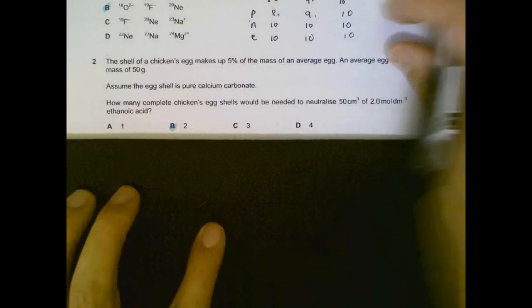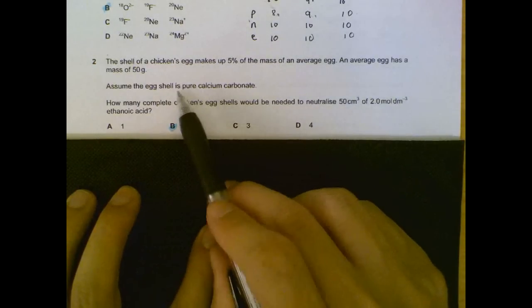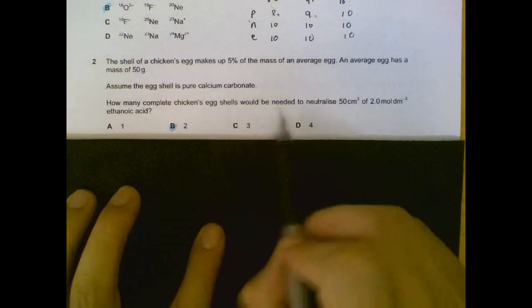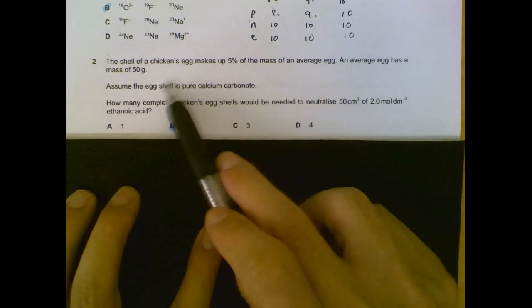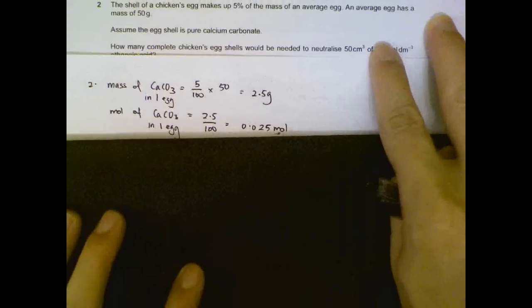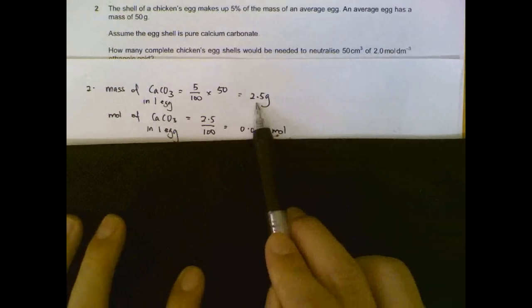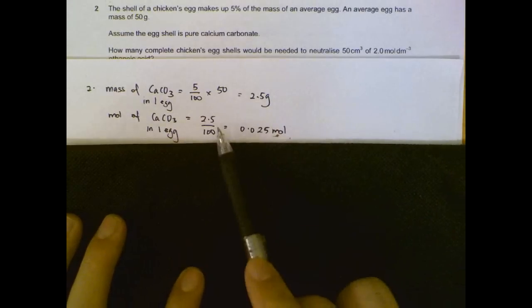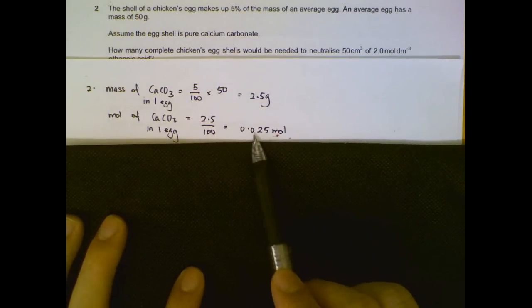Number 2. There is calcium carbonate in a chicken's egg. How many eggs do we need to neutralize this amount of acid? What we can do first is find out the amount of calcium carbonate within a single egg. So 5% of 50 grams, we have 2.5 grams of calcium carbonate in a single egg. Then we divide by the relative molecular mass of calcium carbonate.